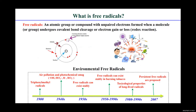I guess most of the audience are familiar with microplastics, so I want to start from free radicals. What is a free radical? Free radicals means atomic groups or compounds with unpaired electrons. They might be formed when the cleavage of a chemical bond under heating or light, or also be formed by redox reaction, like the electrode gaining or losing electrons.